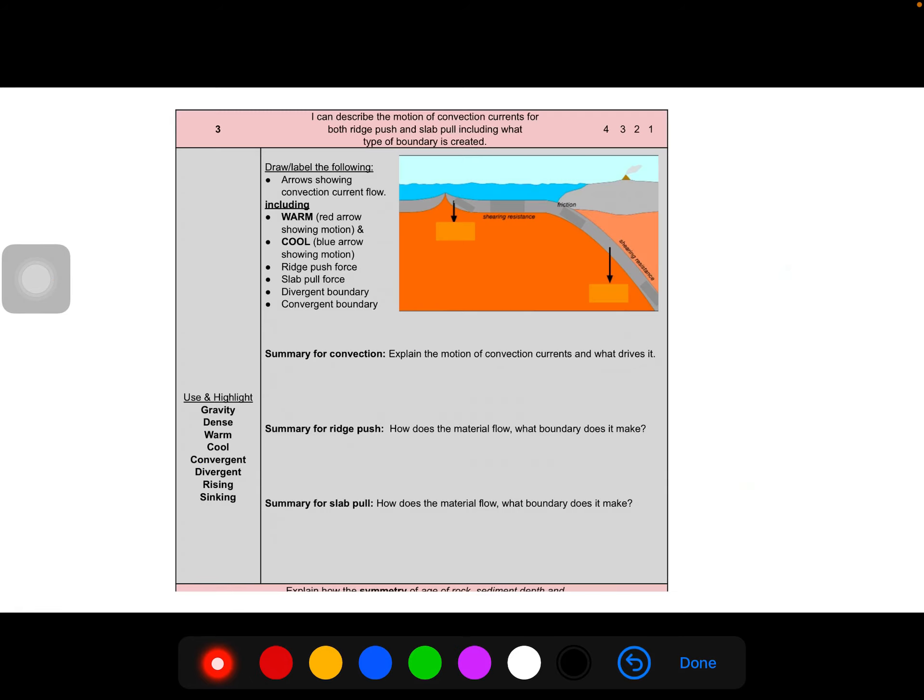So the last step you have, then, is to work your learning target 3, which is really similar to what we just did. You've got a diagram here where you're going to draw one convection current. One current. That's it. So look for the divergent. Look for the convergent. Figure out where the warm, rising, cool sinking would be. And then you can label where those forces are happening, just like we did at the beginning of this review.